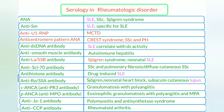Anti-Ro SSA antibody, like SSB, is a protein and is also for Sjögren's syndrome. Importantly, anti-Ro is associated with neonatal heart block — remember anti-Ro for heart block — and also for subacute cutaneous lupus.